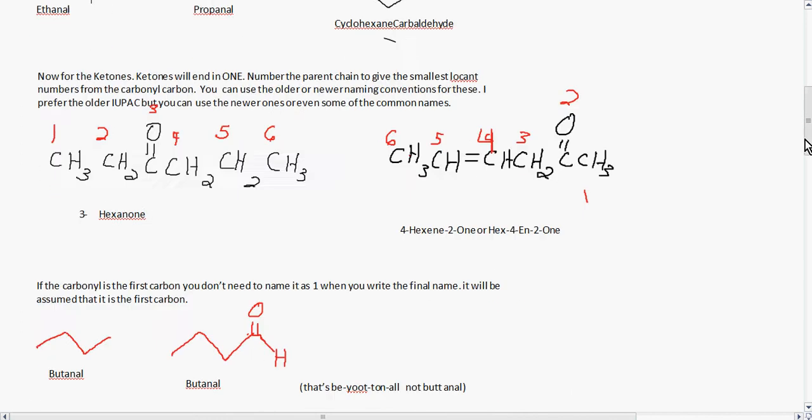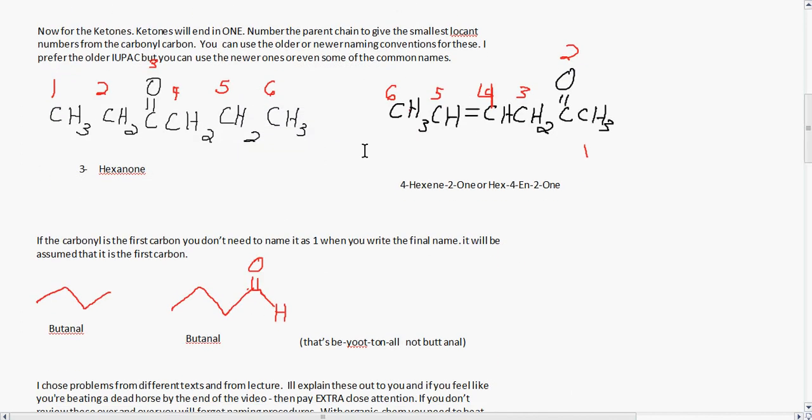Now for the ketones. Ketones will end in O-N-E or ON. Number the parent chain to get the smallest locant numbers from the carbonyl carbon. You can use the older or newer naming conventions for these. I prefer the older IUPAC, but you can use the newer ones, and even some of the common names are generally used. Here's an example of 3-hexanone. You would start from this carbon as your number one carbon,